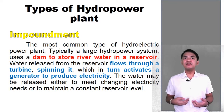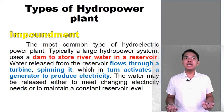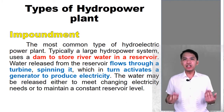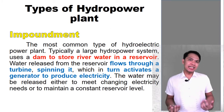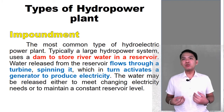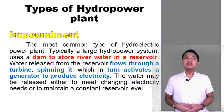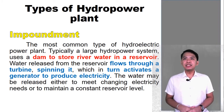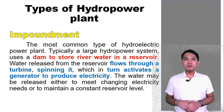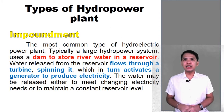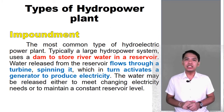Let's talk about the different types of hydropower facilities. Let's begin with the most common and the largest type of hydropower facility, the impoundment. This facility uses a dam to store river water in a reservoir. Water released from the reservoir flows through a turbine, spinning it, which in turn activates the generator to produce electricity. The water may be released either to meet changing electricity needs or to maintain constant reservoir level.